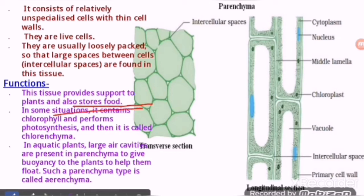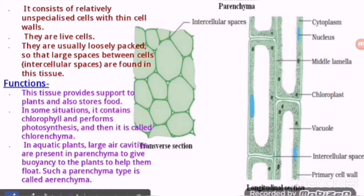In some situations, parenchyma contains chlorophyll and performs photosynthesis, and then it is called chlorenchyma.